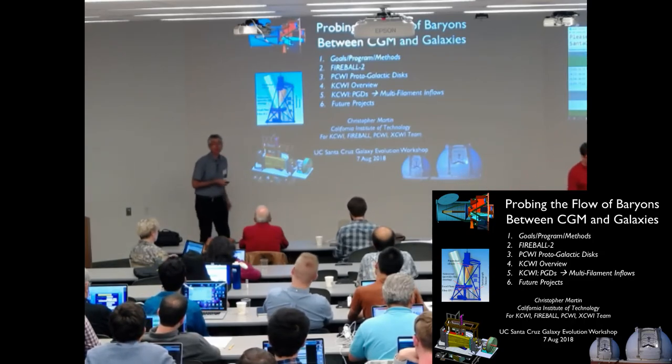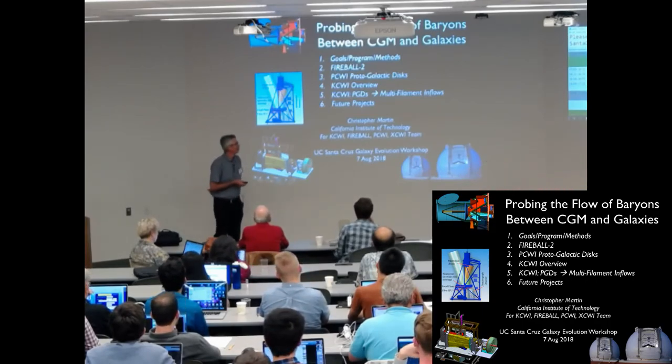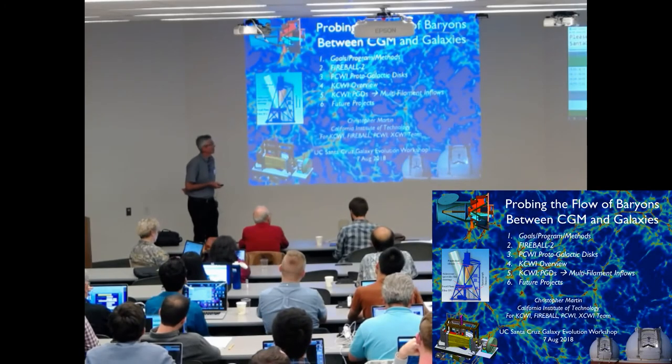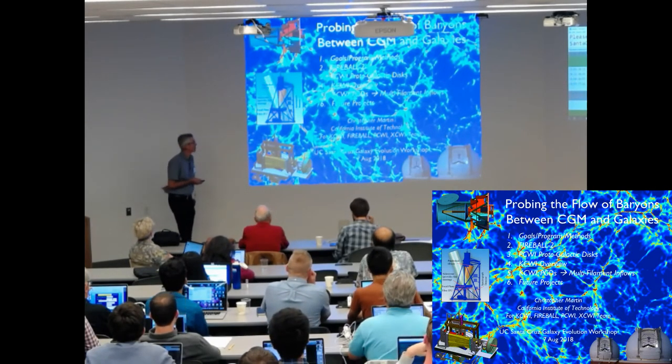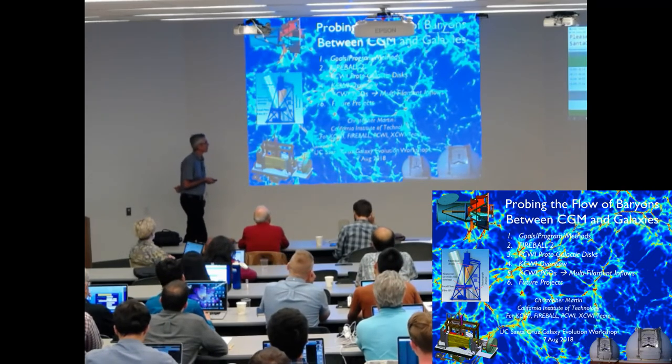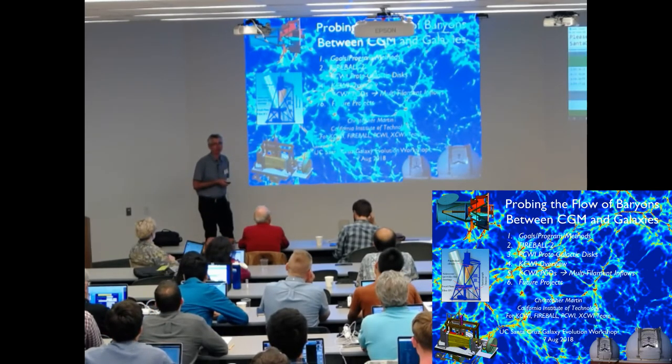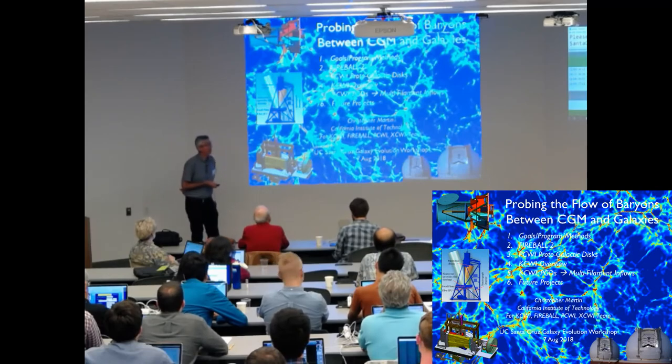I want you to imagine a time decades from now when we can make a map of all the baryons in the universe, not just galaxies. The baryons in the intergalactic medium, the cosmic web, and the circumgalactic medium probably tell an amazingly important story about the evolution and history of galaxies. And we have a program at Caltech with many other collaborators to try to begin this process. So I'll tell you about that today.